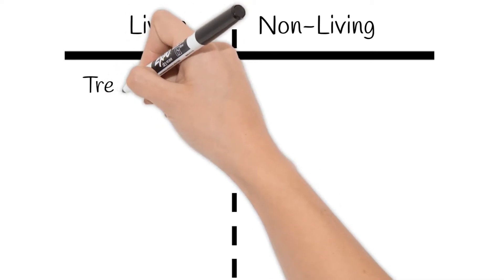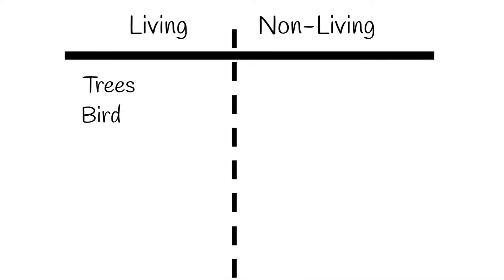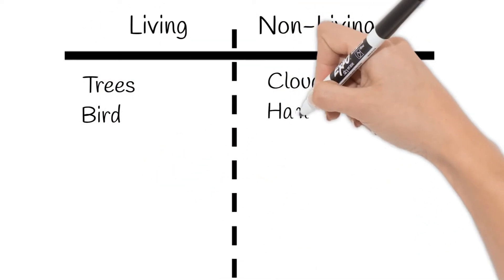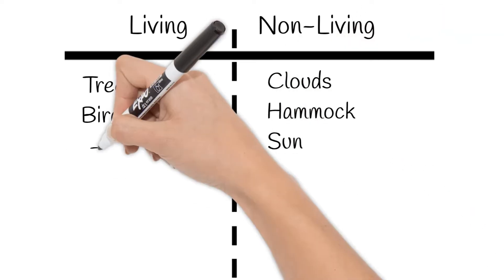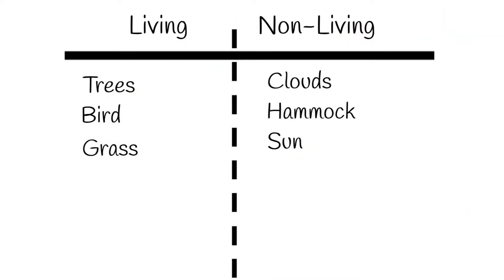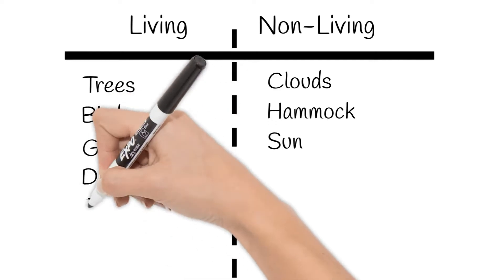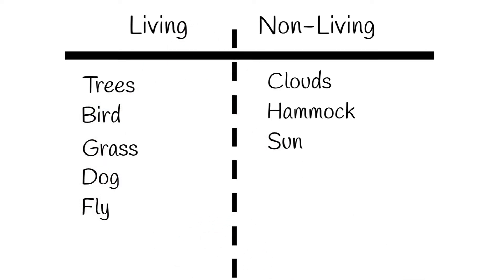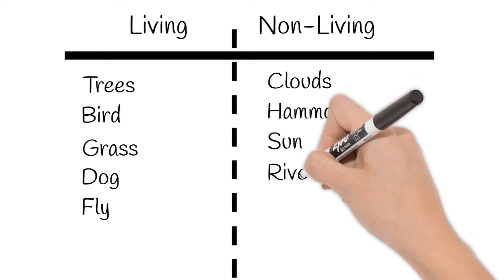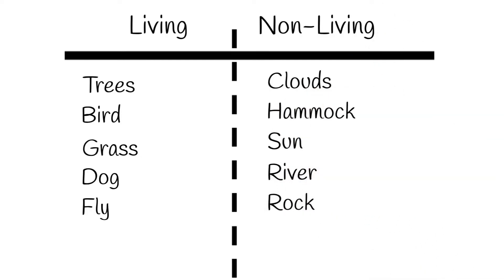So from my window, the trees and bird are living, while the clouds, hammock, and sun are non-living. Oh, and grass would go on the living side. Now your list will be different from mine. Maybe you saw a dog or a fly and put those in the living column, or maybe you saw a river or a rock and put those into the non-living column. No matter what you saw, everything can be organized into these two categories.